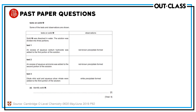Nothing was told about solid M, but tests and observations are given. We have to identify what ions are present in solid M from these tests. The first test is with sodium hydroxide — the test for cations — and a red-brown precipitate is seen. The ion that gives a red-brown precipitate is iron(III). So iron(III) ions may be present.